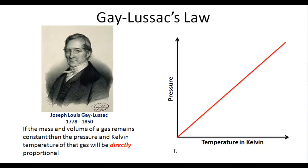Hey you guys, this is Mr. Millings, and today we're going to talk about Gay-Lussac's Law. Joseph Louis Gay-Lussac was a French scientist that lived in the 1700s and 1800s, and he states that if the mass and volume of a gas remains constant, then the pressure and Kelvin temperature of that gas will be directly proportional.